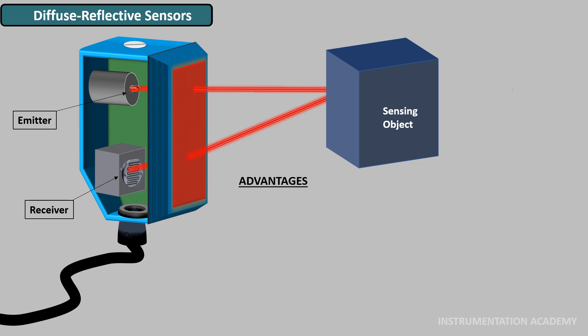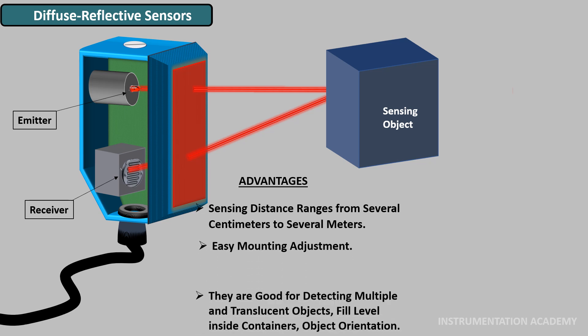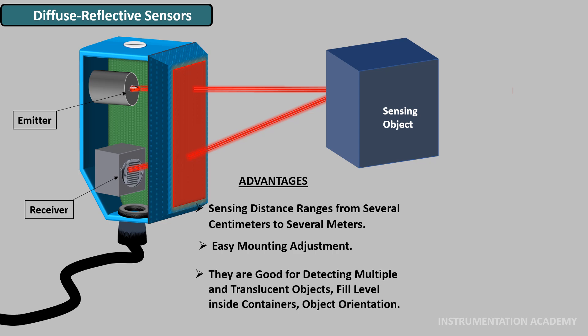Advantages of diffuse reflective sensors: Sensing distance ranges from several centimeters to several meters. Easy mounting adjustment. They are good for detecting multiple and translucent objects, fill level inside containers, and object orientation. Disadvantages: Sensing can be affected by color, texture, dirt, and other factors.